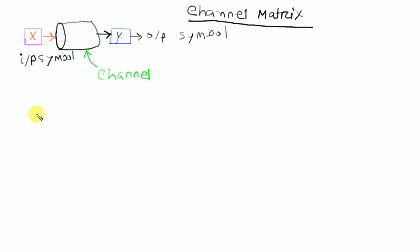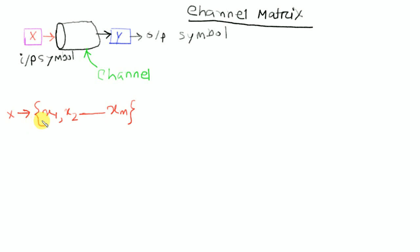So we consider the input symbol x, with m symbols to transmit. Our input symbols are x1, x2, ... xm. The output symbol y is equal to y1, y2, ... yn.